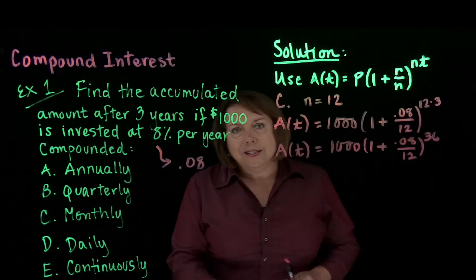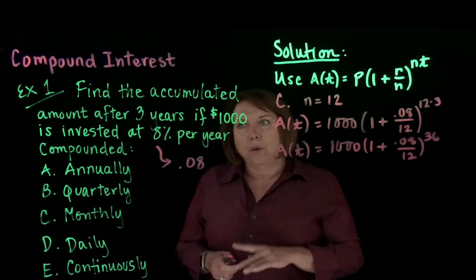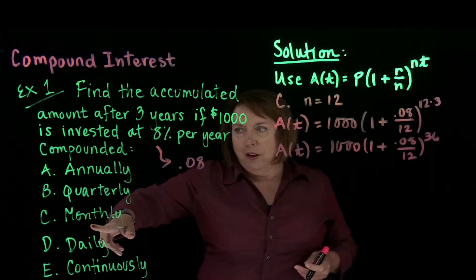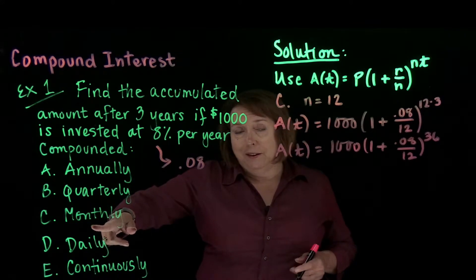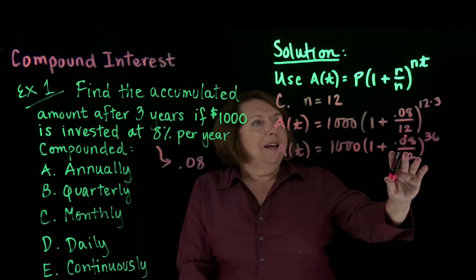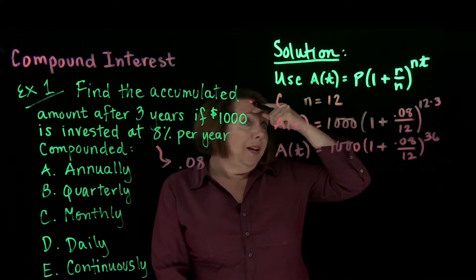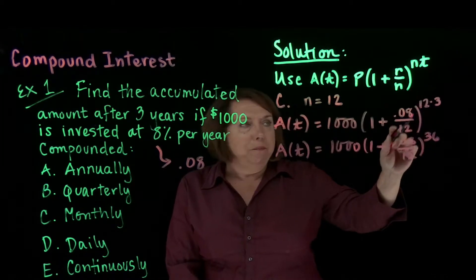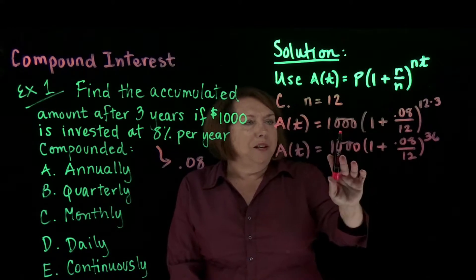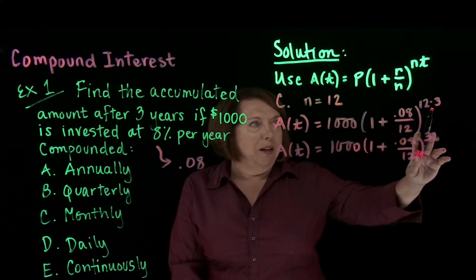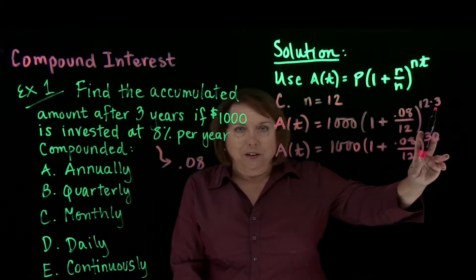So students, let's continue our work with finding the accumulated amount. This time, our compounding is going to be monthly, which means that N is equal to 12. Applying N in the formula, inputting 12 for N here and in the exponent. Our interest rate is still 0.08. Our principal is still $1,000 we're starting with. Our time of investment is three years.